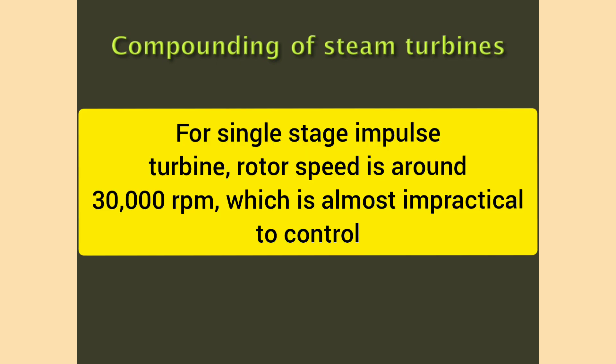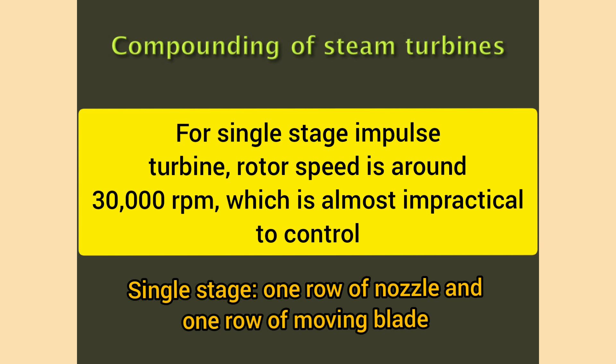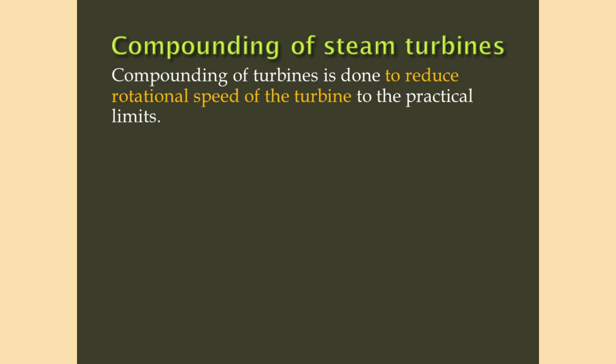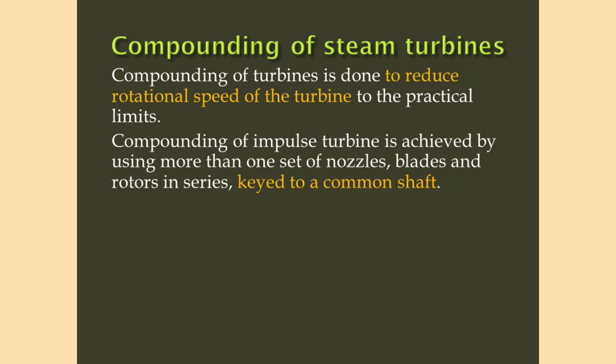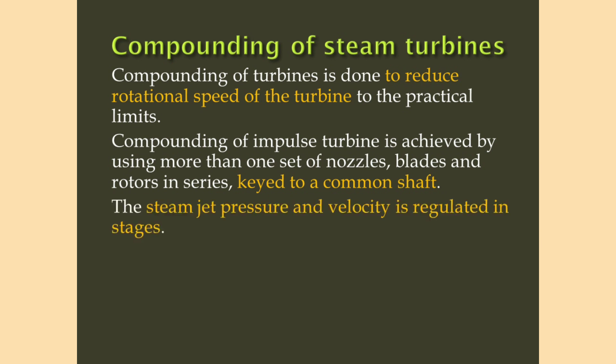In the case of a single stage impulse turbine, the rotor speed is of the order of 30,000 rpm. Single stage means one set of nozzles and one set of moving blades. If the turbine rotates at such speed, it is impractical to control it. So we use compounding of turbines to reduce the speed to practical limits. Compounding is achieved by using more than one set of nozzles, blades, and rotors in series, keyed to a common shaft. The pressure and velocity of steam is regulated in different stages.